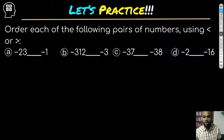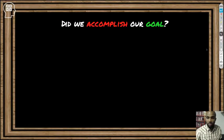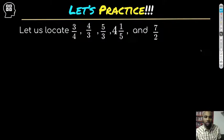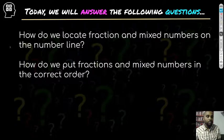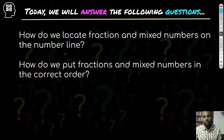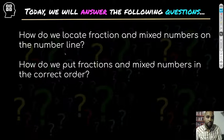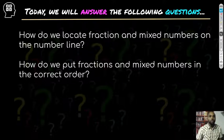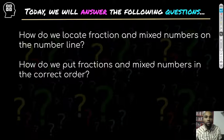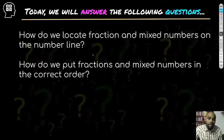Did we accomplish our goal? Yes we did. How do we locate fractions and mixed numbers on a number line? We talked about how to locate them. If it's an improper fraction, convert it into a mixed number to see it better. How do we put fractions and mixed numbers in the correct order? Using the number line — once we plotted them, we could see the order. My name is Brandon Clayton, the Algebra Guy — thank you for tuning in and I will see you next lesson.